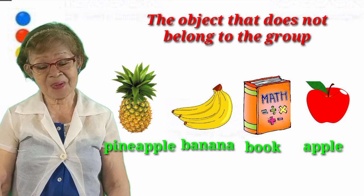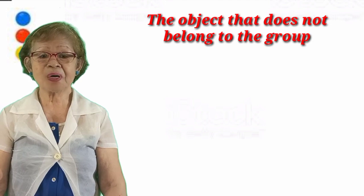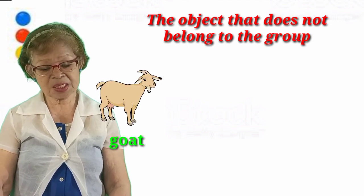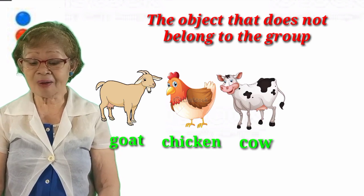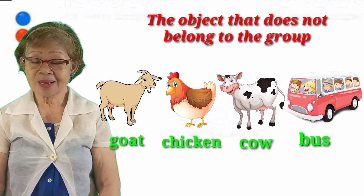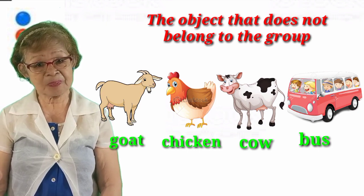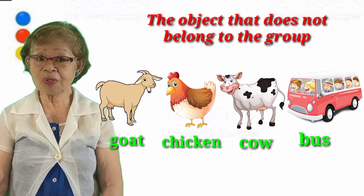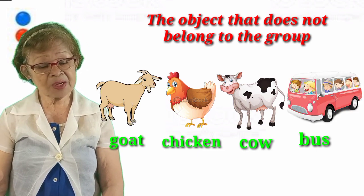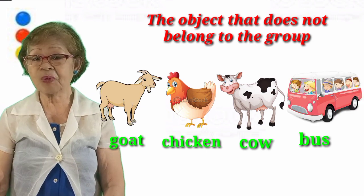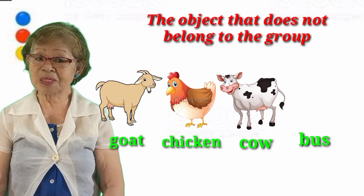So we have another example here. These are the farm animals: the goat, the chicken, and the cow. But we have an object that does not belong to the group. What do you think is that object? Of course it is the bus, because the goat, the chicken, and the cow are farm animals, but the bus does not belong to the group.